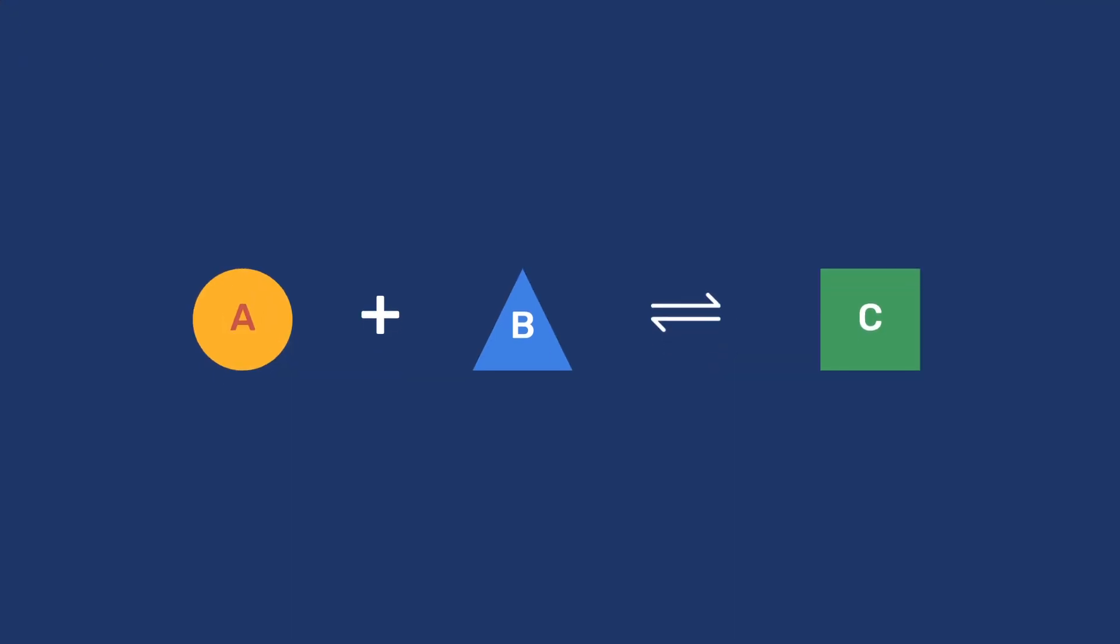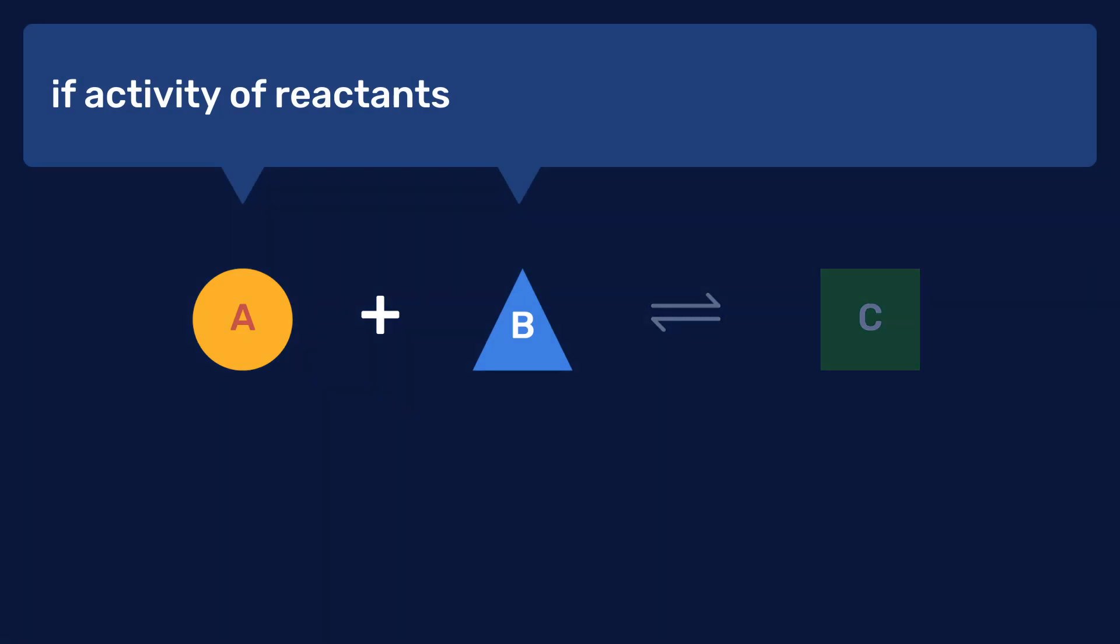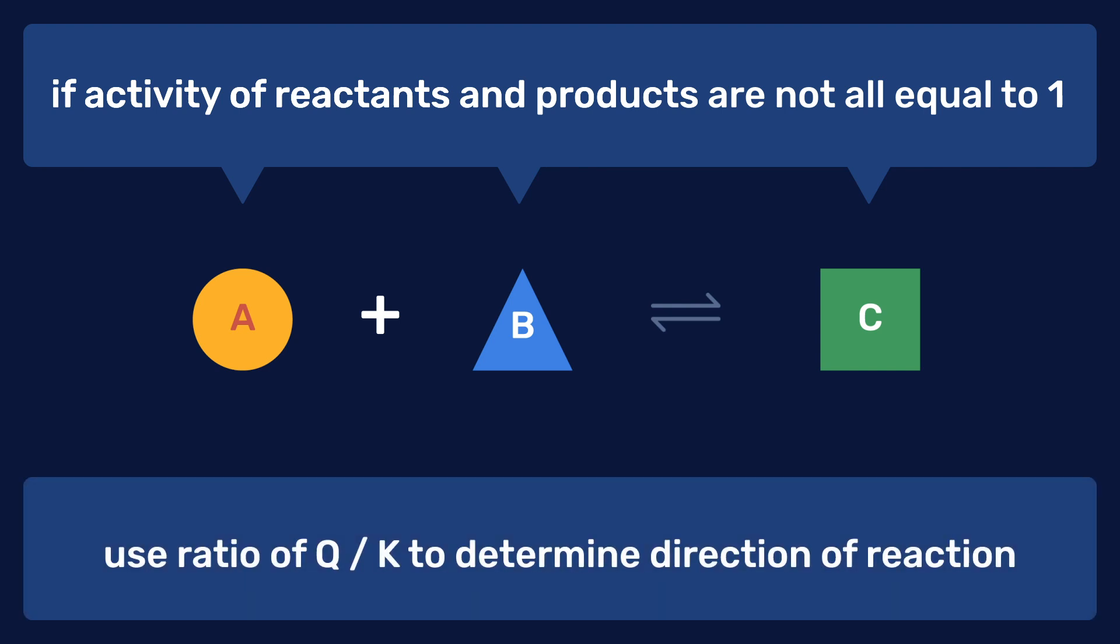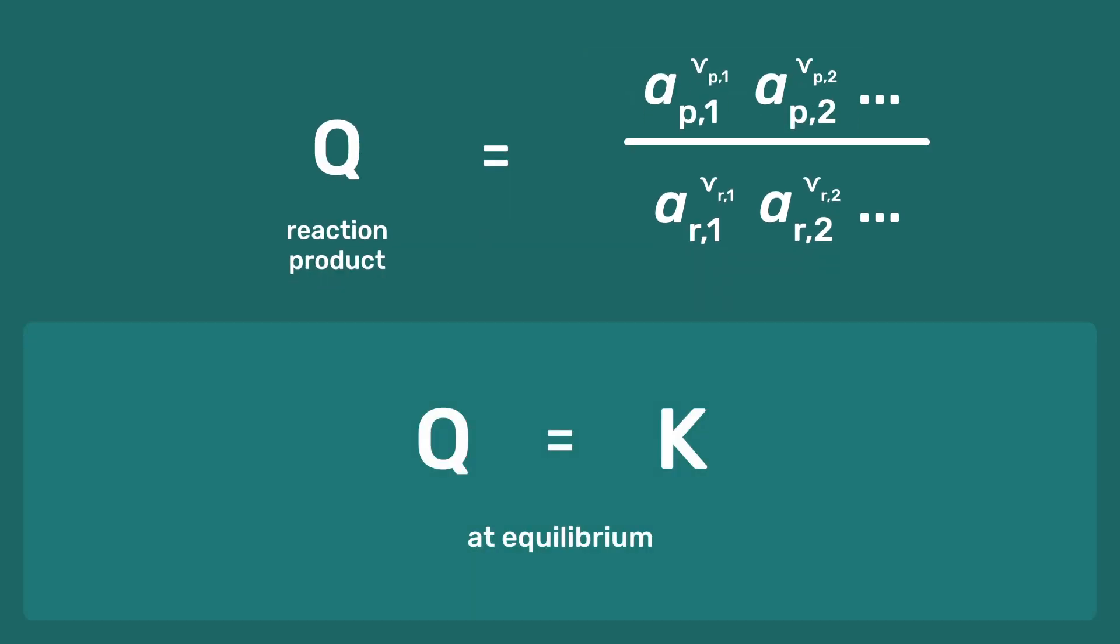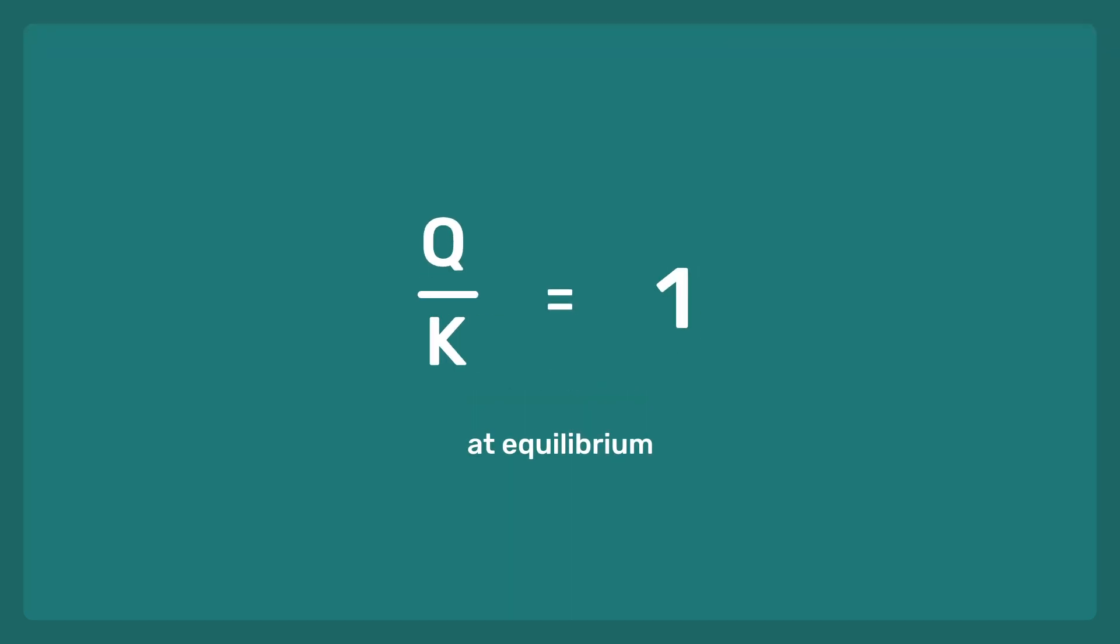To consider more general cases where the activities of reactants and products are not all equal to 1, we look at the ratio of Q over K. Remember that Q is the reaction product obtained using the activities of the compounds as found in the system, while K is the specific value of Q at equilibrium. This means that Q over K equals 1 at equilibrium.